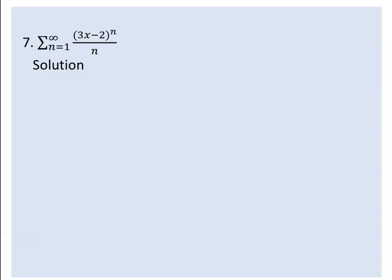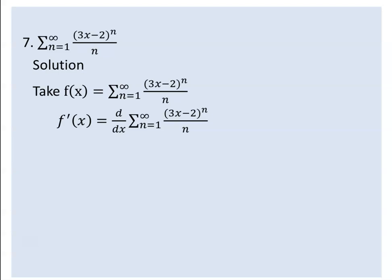We are given a series defined by (3x-2)^n over n. We want to find the derivative of this power series. A function f(x) explained as a power series, and we are going to look at the derivative. The derivative of this is denoted by f prime at x, which is equal to d/dx of the series.